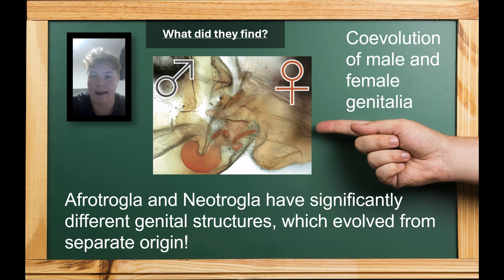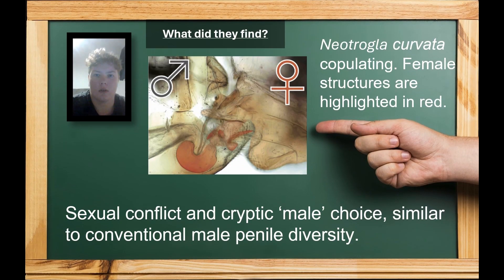The study detected a correlated evolutionary pattern between male and female genitalia. This co-evolution implies that both reproductive structures influence each other's evolution. Sexually antagonistic co-evolution like this is normally driven by sexual conflict, and may have driven the diversity of the female penis, similar to male penis diversity in animals with conventional genitalia. Cryptic, in this sense, refers to the process occurring subtly and not through obvious external displays.